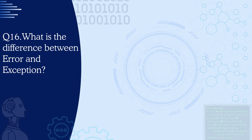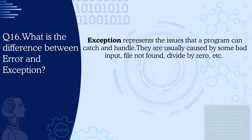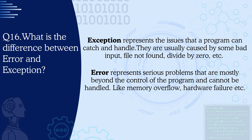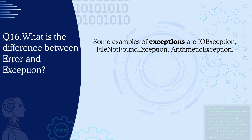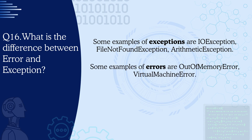Question 16: What is the difference between error and exception? Exception represents issues that a program can catch and handle — usually caused by bad input, file not found, or divide by zero. Error represents serious problems mostly beyond the control of the program that cannot be handled, like JVM issues, memory overflow, or hardware failure. Examples of exceptions: IOException, FileNotFoundException, ArithmeticException. Examples of errors: OutOfMemoryError, VirtualMachineError.